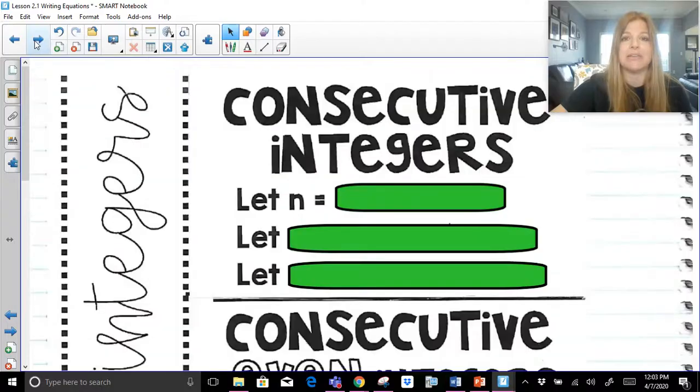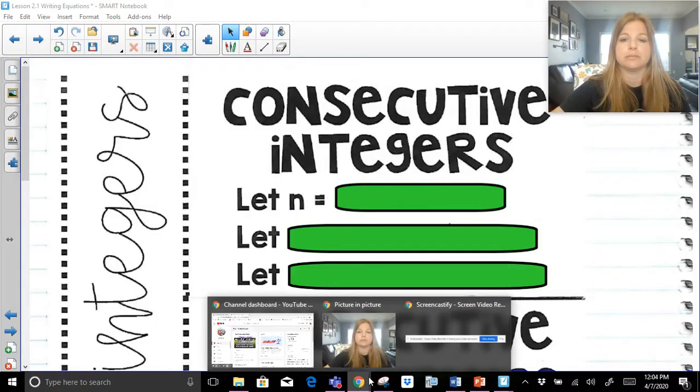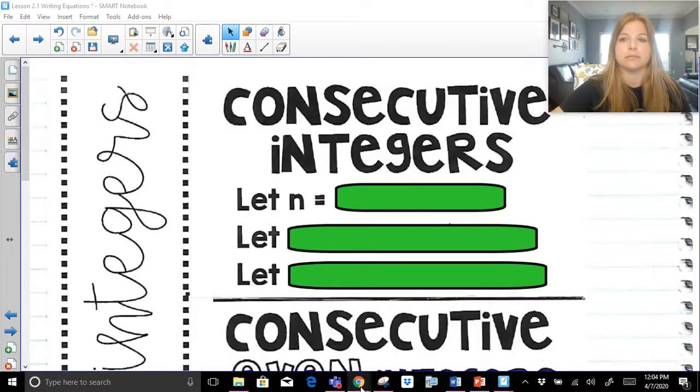Now we're going to take a look at consecutive integers. The first thing we have to know when we set up a consecutive integer problem is we have to define the variable. We have to tell the reader what the variables stand for or what our variable expressions stand for.